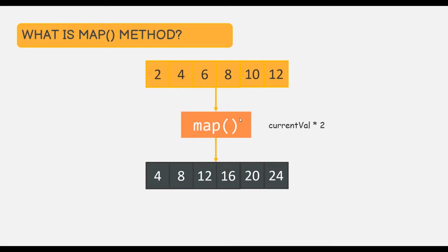Inside this map method, we have written a logic to multiply 2 with the current element. So for each iteration, 2 will be multiplied to the current element. For the first iteration, 2 will be multiplied to 2. For the second iteration, 2 will be multiplied to 4. For the third iteration, 2 will be multiplied to 6. In this way, map will return a new array with the transformed data — element 2 becomes 4, element 4 becomes 8, element 6 becomes 12, and so on.